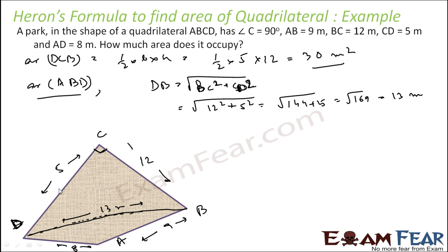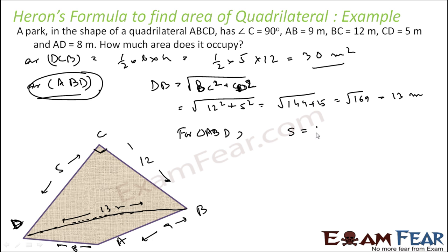Once we have all the sides of triangle ABD, we can easily find its area. For triangle ABD, the value of S is the sum of all sides divided by 2: that is 13 plus 9 plus 8 divided by 2, which is 15 meters.